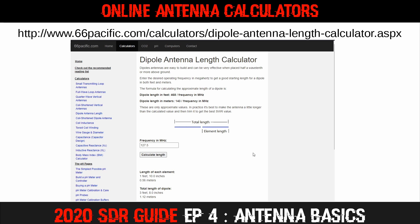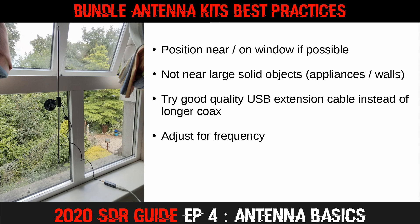For those of you using a bundled antenna kit, here are the ways you can make best use of it. Position it at or on a window if using it indoors — upstairs rooms will generally work better than downstairs rooms. If a window isn't available, make sure the antenna's view is not obstructed by large solid objects like televisions, computer monitors, kitchen appliances or walls. Instead of using a coax extension, try to use a USB extension to connect your SDR to your laptop. Then adjust for the frequency using the dipole formula we looked at earlier.